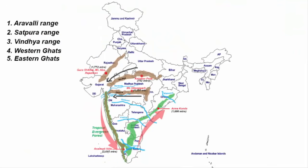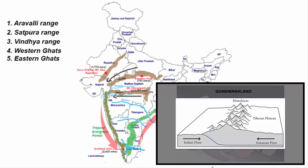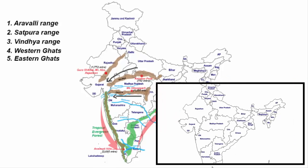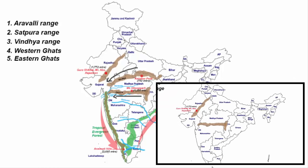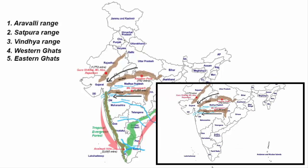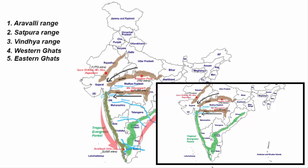Before I begin, I want you to watch this video on the peninsula mountains of India. After watching that video, you will understand the land terrain of the peninsula plateau. Once you have some idea about it, it will be easier for you to understand the river pattern, because rivers flow with the slope of the land. Hence, knowing the topography is equally important.